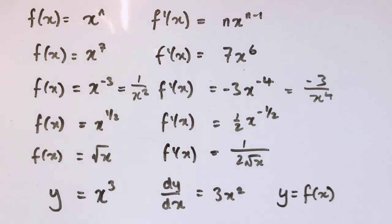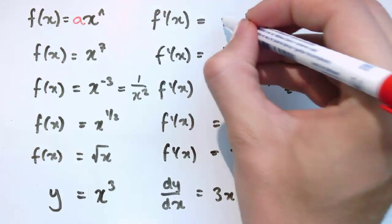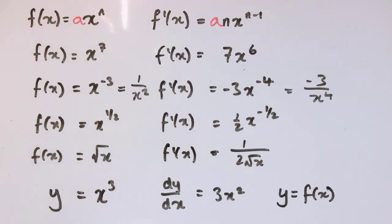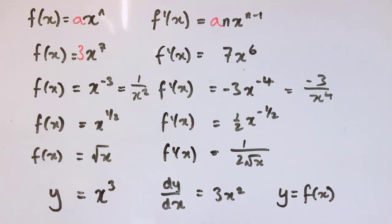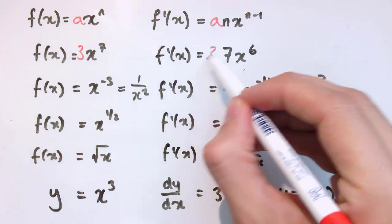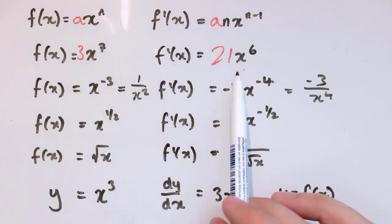So, the first extension of this rule is this, that we can multiply in front of a function by any number. So, for example, I can just multiply it by a. So actually I could take this one, I could multiply it by 3, and I would just get 3 times 7 times x to the 6 as the derivative, which is 21. So, I would get 21x to the 6.